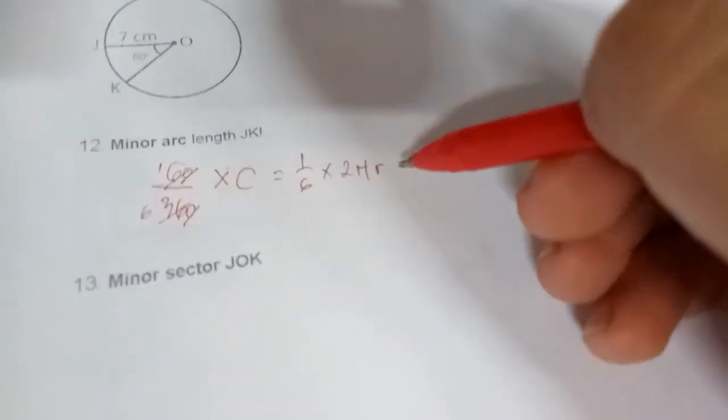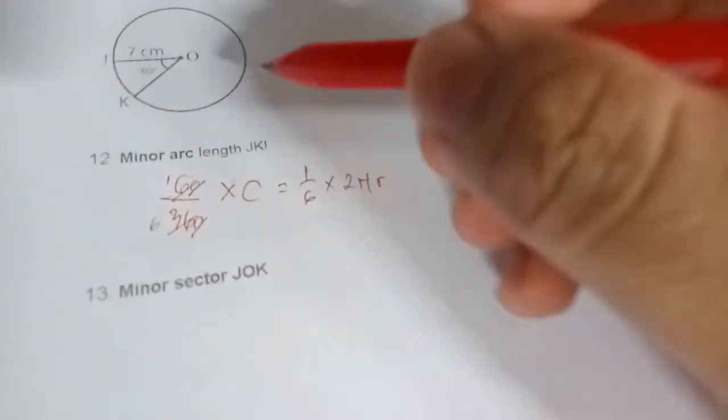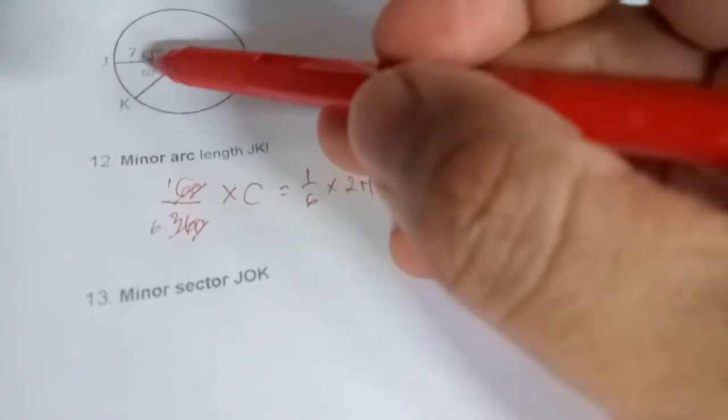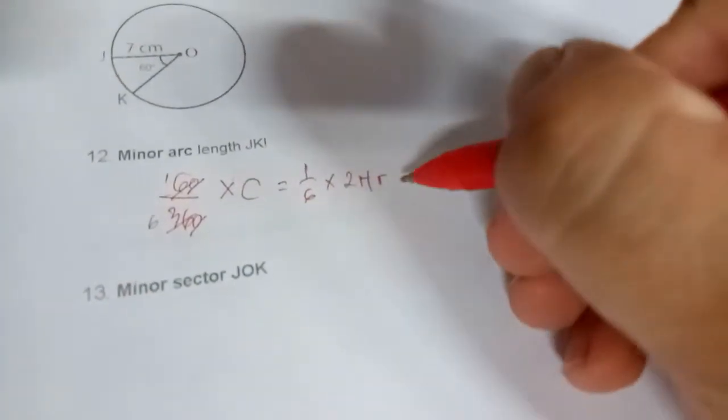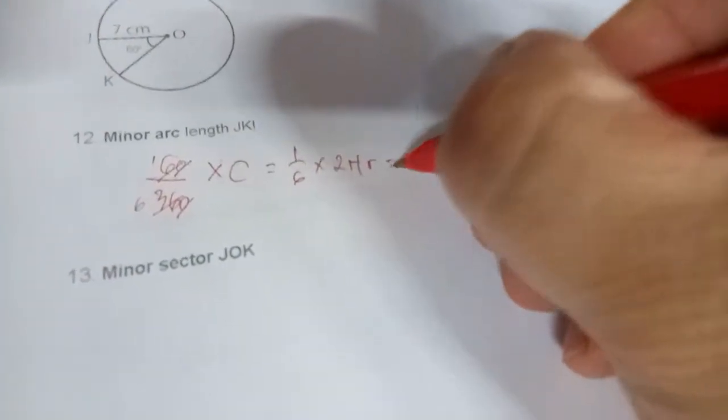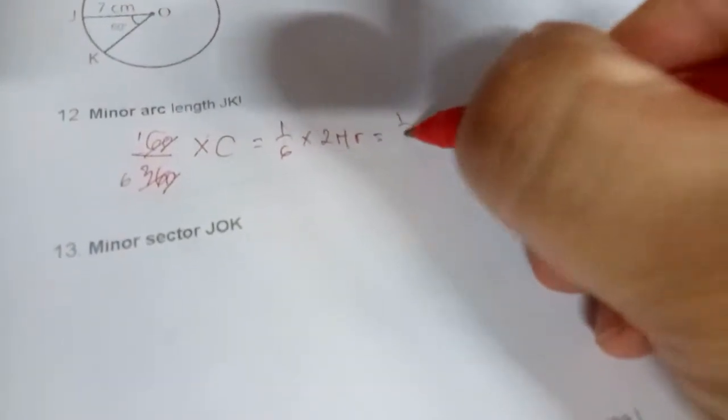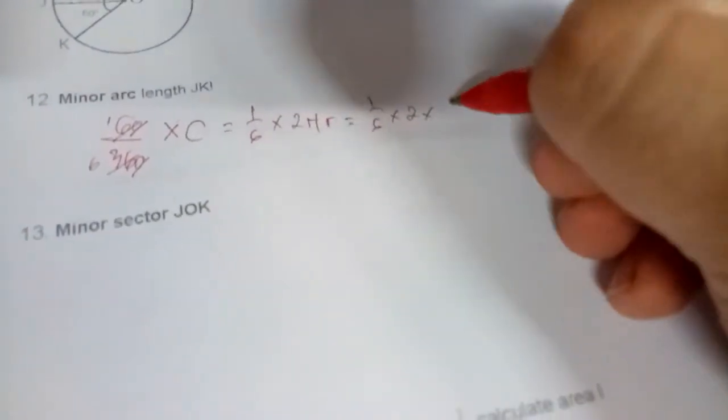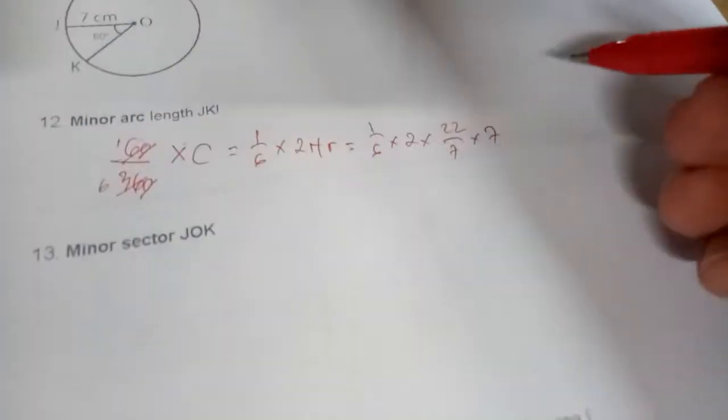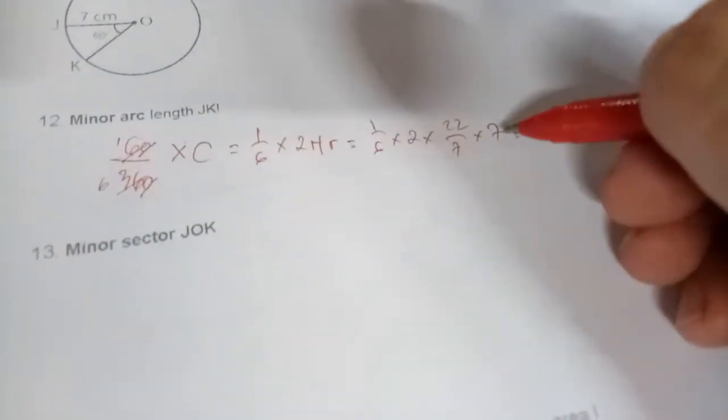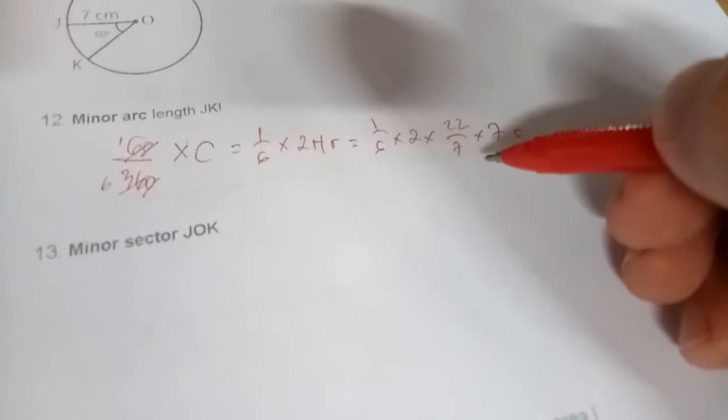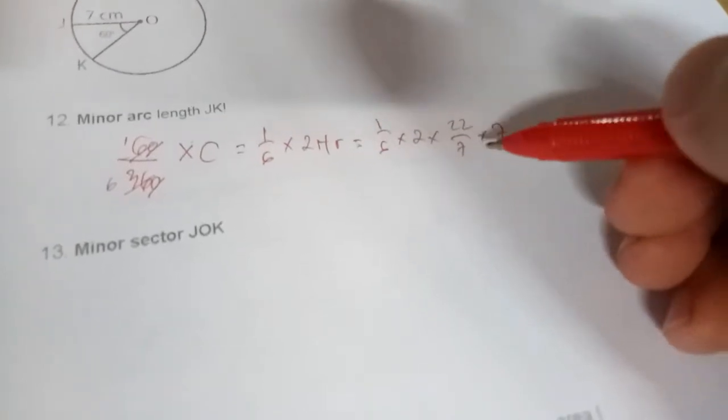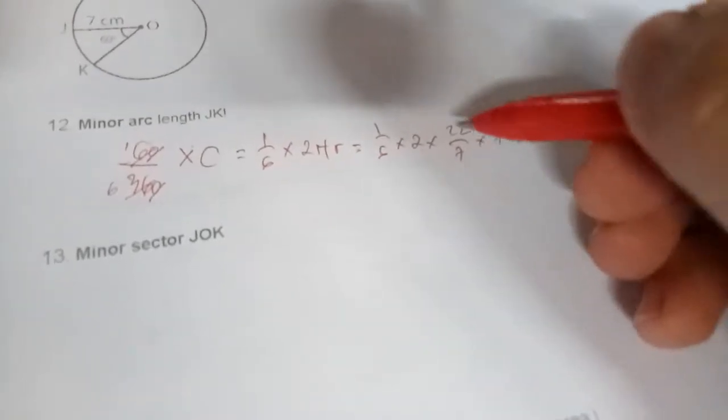Because the radius is 7 and it's divisible by 7, we use π equals 22/7. So it's 1/6 × 2 × 22/7 × 7. Whenever you do a calculation like this with fractions, you can cancel the numerator with the denominator. So 7 with 7 is 1 and 1.